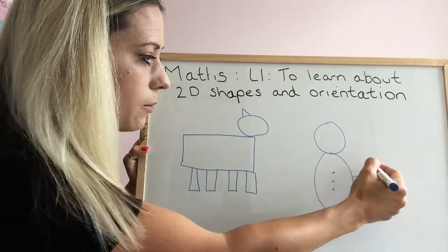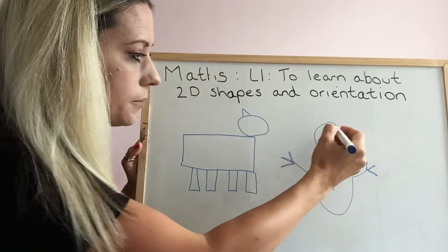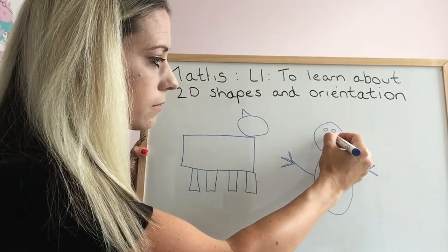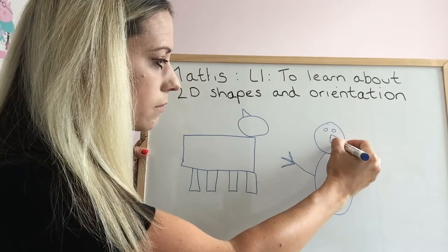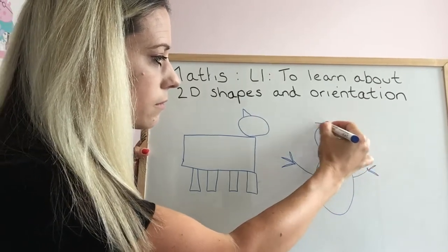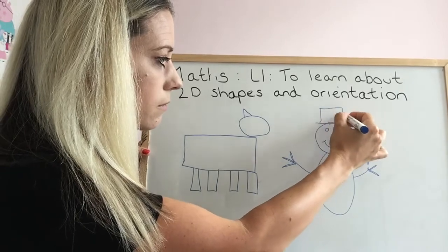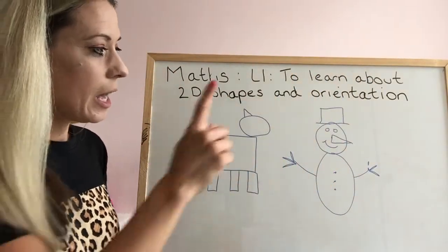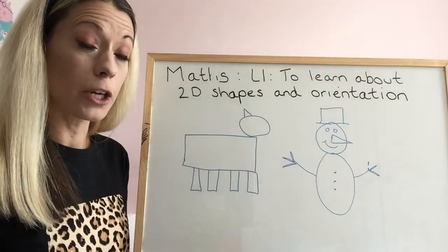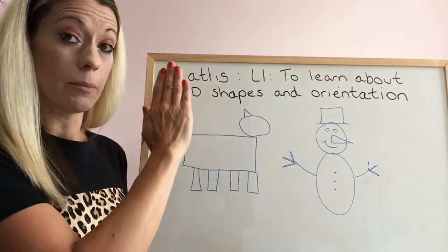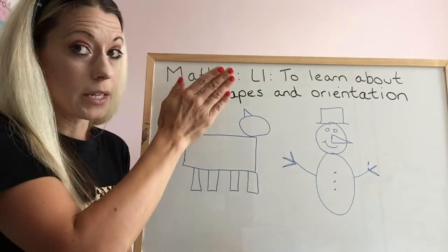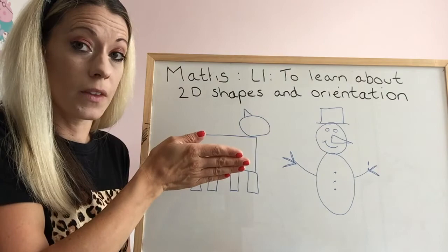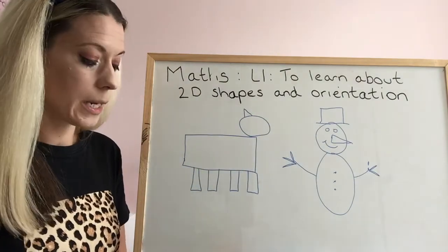Can you shout out what you think this picture might be of? It's a picture of a snowman. Well, it's not upright anymore — I've orientated it to face a different direction. And that's what we're going to be looking at in a bit more detail.